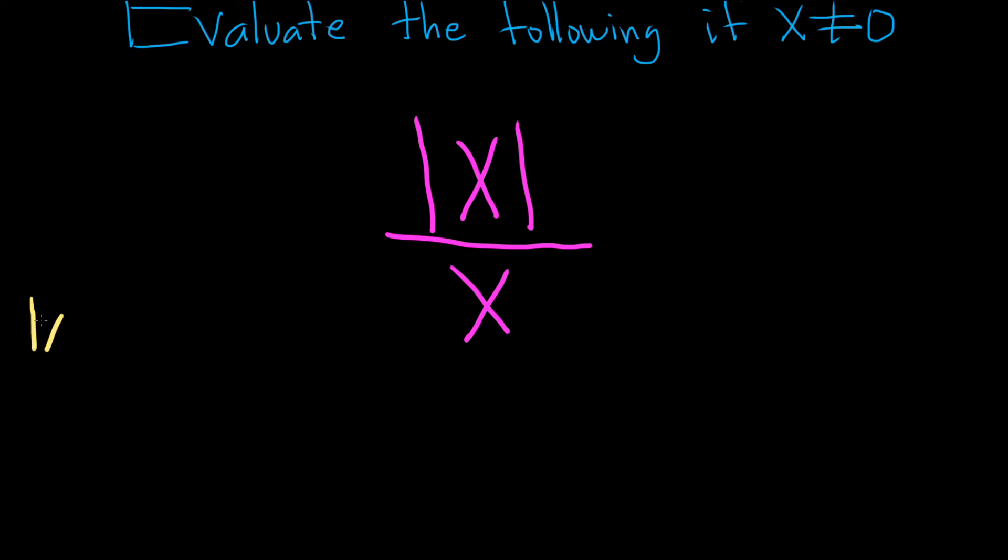The absolute value of x is equal to x, and this will be true if x is greater than or equal to 0. And the absolute value of x is equal to minus x, or the opposite of x, or negative x, if x is less than 0.